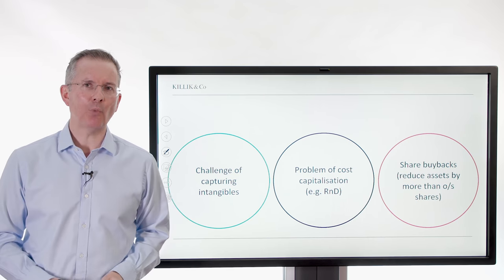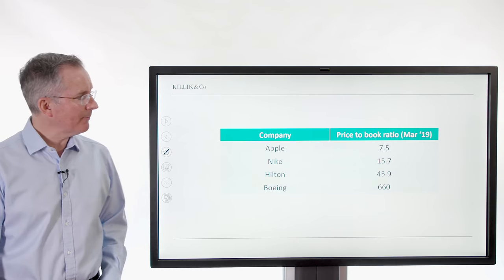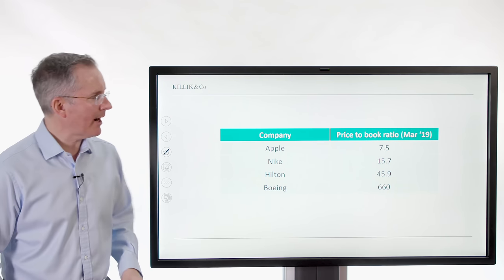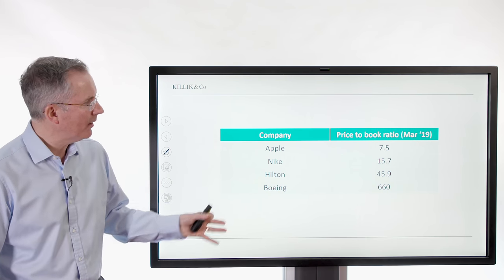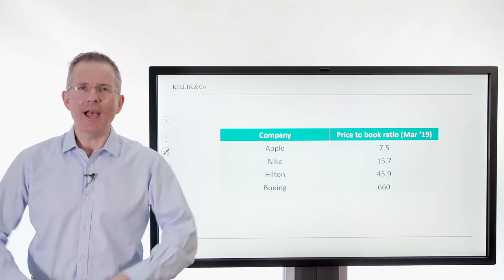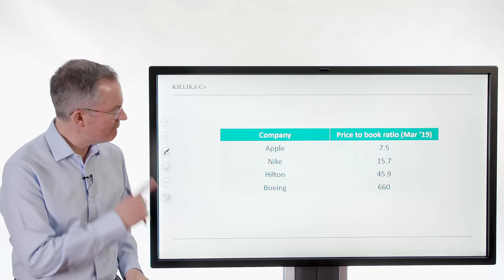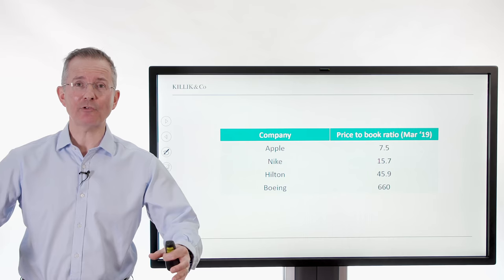And as if to make the point, on a price to book basis you probably wouldn't buy any of these, because where are you seeing anything like less than one? You know, Apple seven and a half all the way to Boeing 660. And yet as an investor there might be circumstances under which you think maybe I do want one or two of these in my portfolio. But the price to book ratio is not telling you that.